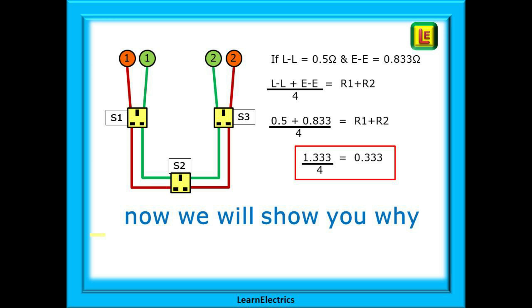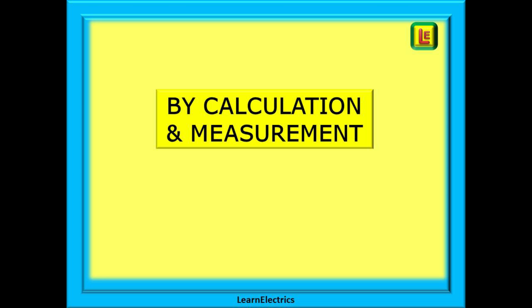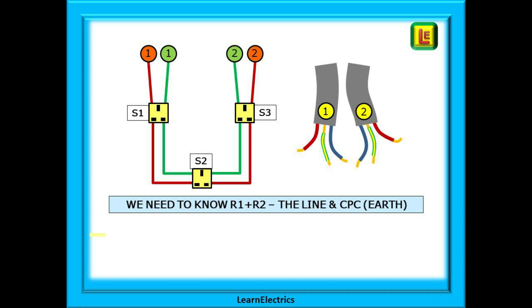Now we will show you why divide by 4 works. We can do this by calculation and by measurement. Stay with it, it only gets easier. Let's begin. We need to know the R1 plus R2 value, the effective resistance of the line and CPC or earth. If something goes wrong with the circuit, what is the resistance of the fault path taken by the fault current.